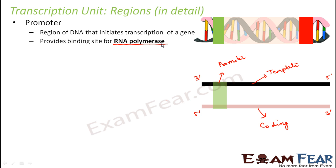The promoter provides a binding site for RNA polymerase. Just as DNA polymerase plays the leading role in DNA replication, RNA polymerase plays the leading role in transcription. RNA polymerase binds to the transcription unit at the promoter. Only once RNA polymerase binds can it start the process of transcription.